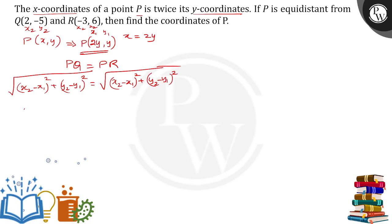In the PQ form, x₂ is (2-2y)² plus y₂ minus y₁ means (-5-y)² under square root is equal to square root of x₂, this time it will be (-3-2y)² plus (6-y)².